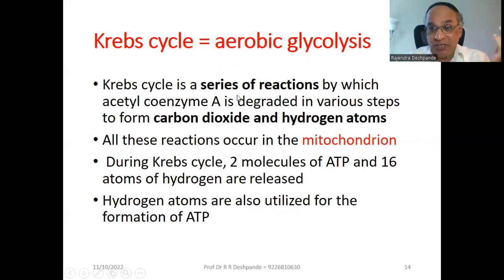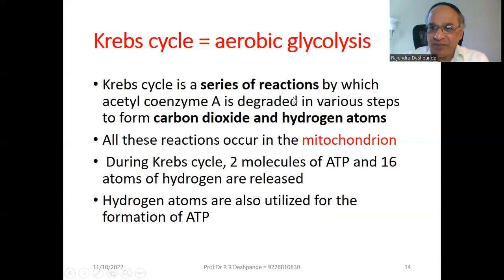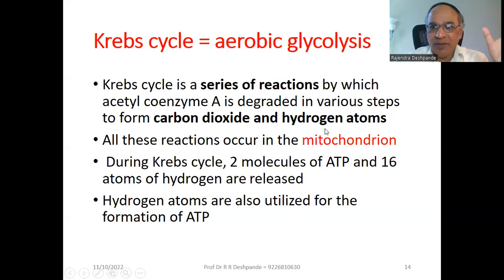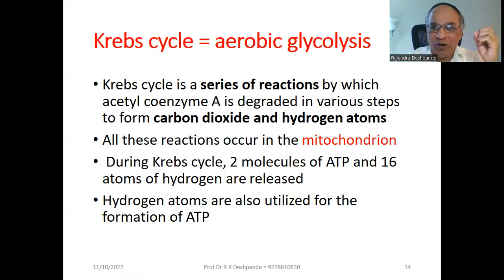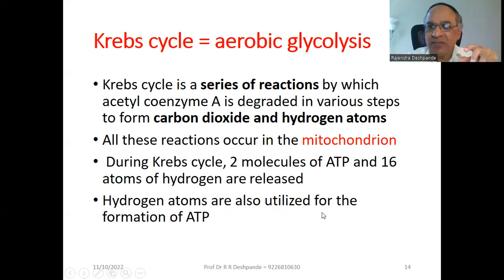The Krebs cycle is very famous — you may get a separate SAQ or LAQ question on it. The Krebs cycle is a series of reactions by which acetyl coenzyme A (acetyl CoA) is degraded step by step to form carbon dioxide (CO₂) and hydrogen atoms (H₂). CO₂ and H₂O are the final products. All these reactions occur in the mitochondria — the powerhouse of the cell. During the Krebs cycle, two molecules of ATP and 16 atoms of hydrogen are released, and those hydrogen atoms are also utilized for ATP formation.